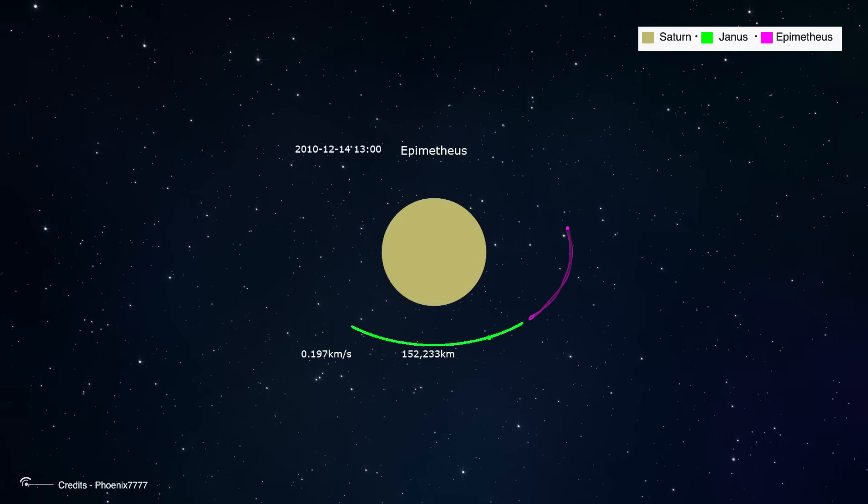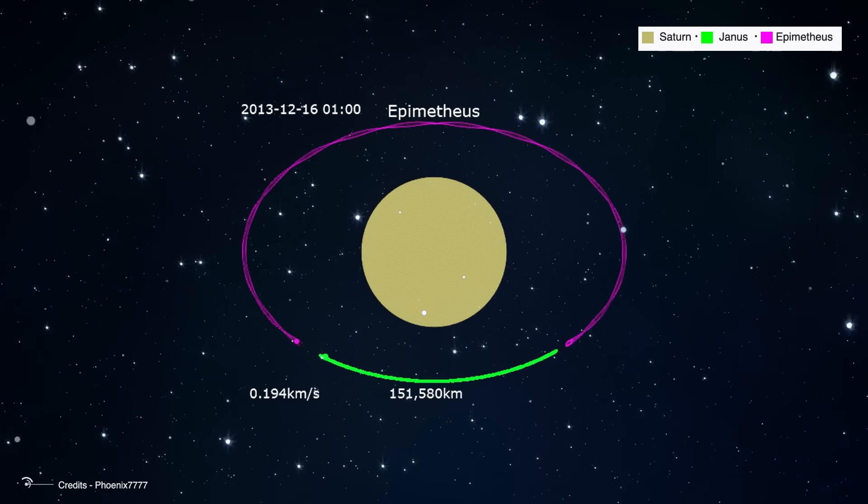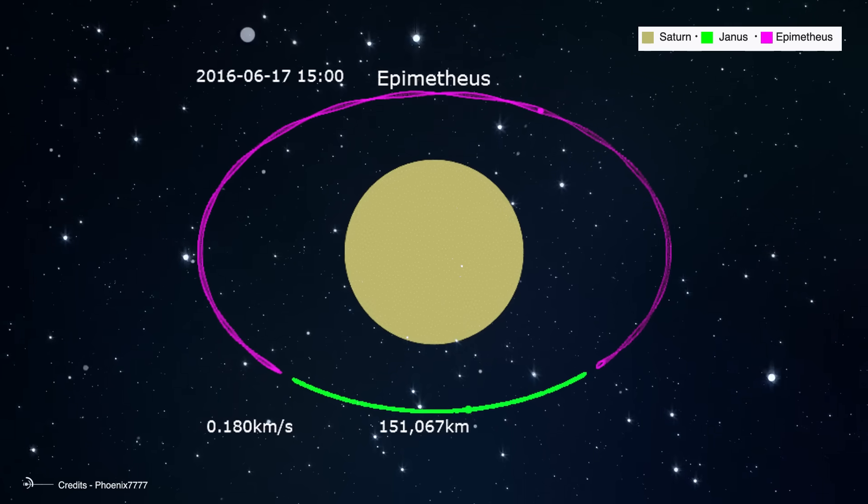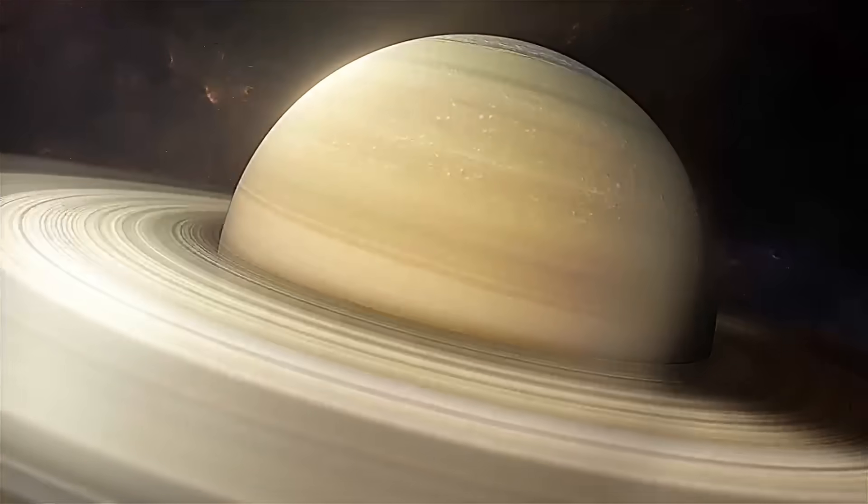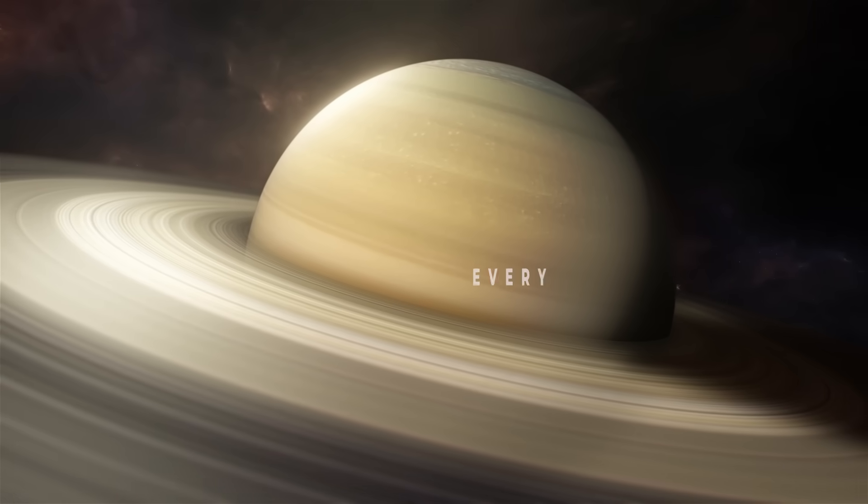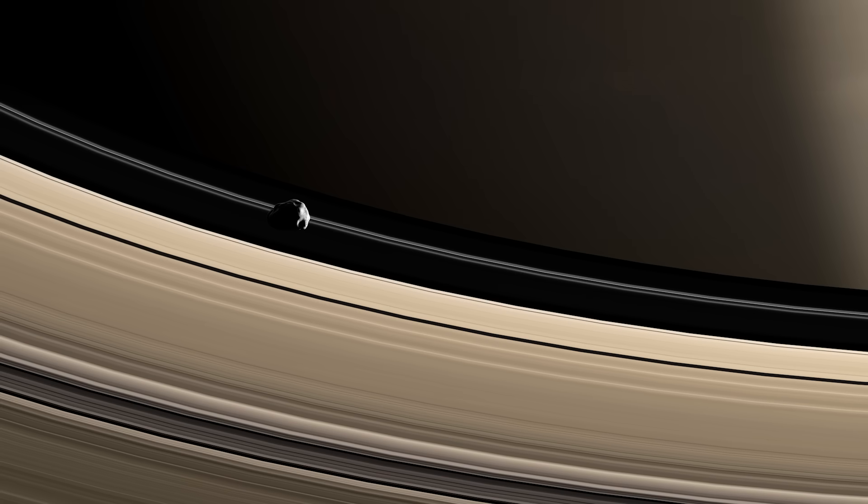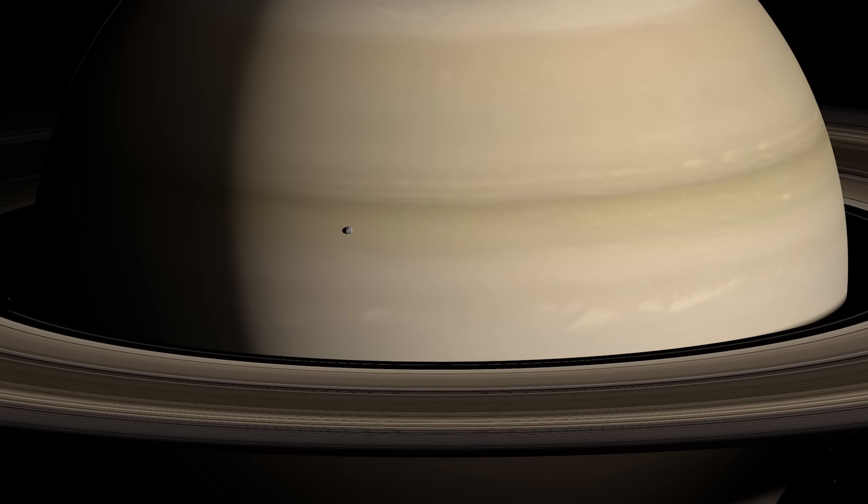Unlike other moons with clearly separated orbits, Janus and Epimetheus orbit Saturn about the same distance from the planet, about 151,000 kilometers. So how do they manage to co-exist without colliding? The key is in their gravitational interaction. Whenever one of these moons comes slightly closer to the other, about every four years, gravity causes them to swap positions. The moon in a slightly closer orbit to the planet receives a gravitational nudge that lifts it into a higher orbit while the other descends slightly. This continuous exchange prevents them from colliding and maintains their orbital balance.